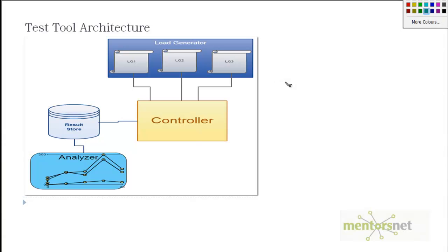Hello, welcome back. In the last video we discussed about test tool architecture. We said that we need a controller so that we can control the different load generators, and then we need a result store so that we can store all those performance-related data in one single location. Then we have an analyzer, and this analyzer program is going to read from this result store and give us important metrics and data that makes sense.